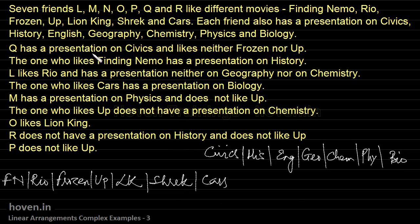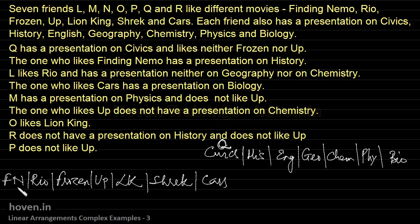Q has a presentation on civics — this is confirmed, so we write Q under Civics. Q likes neither Frozen nor Up, so we mark Q-cross under both Frozen and Up. This will help us later to avoid allocating Q wrongly.